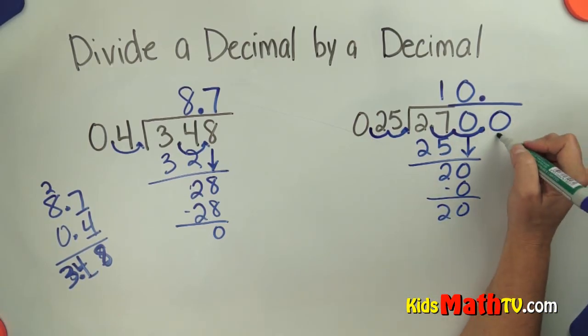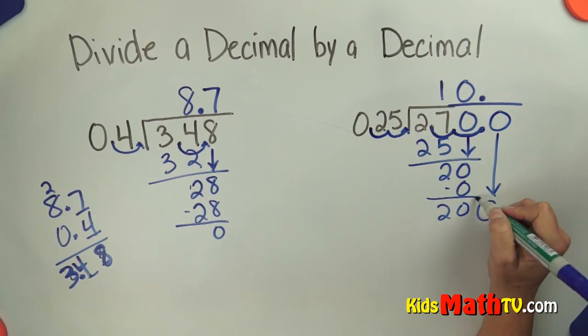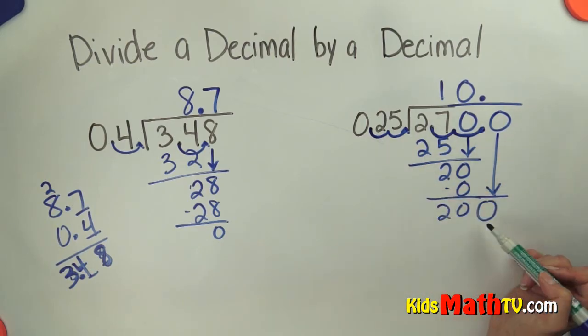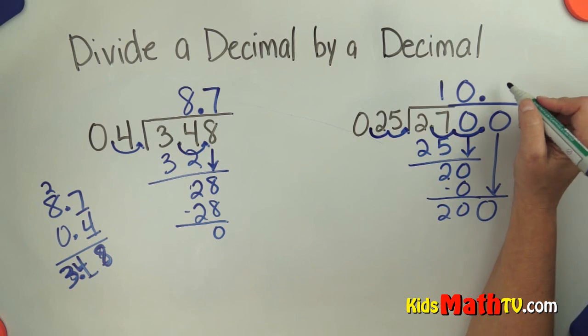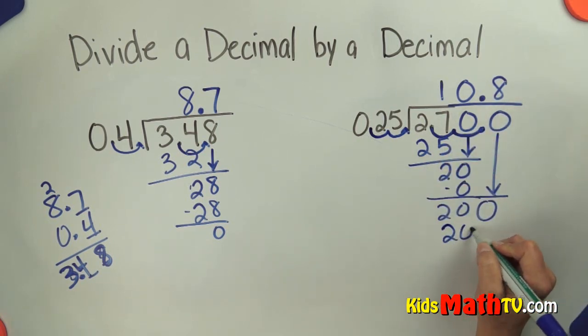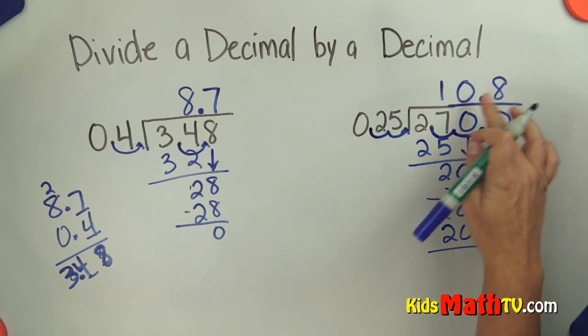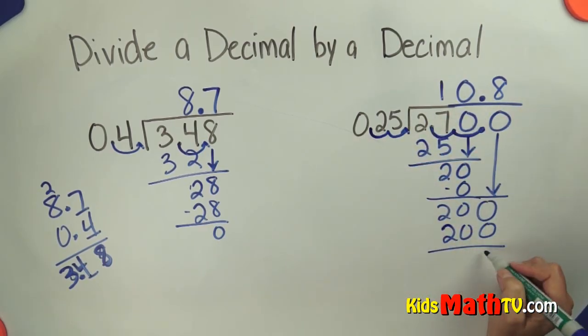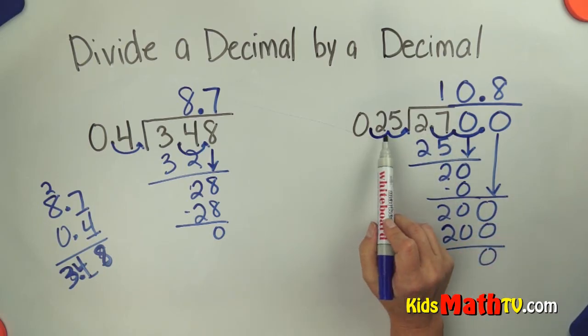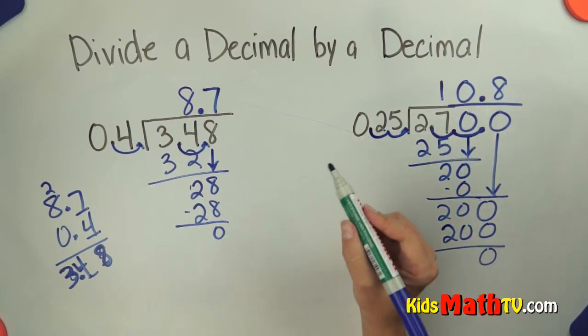Now I can put another 0 here and bring it down making 200. So I can add 0's after a decimal. How many 25's in 200? Well, that is 8. 8 times 25 is 200, or 8 quarters if you're thinking money, and 0. So 2 and 7 tenths divided by 25 hundredths is 10 and 8 tenths.